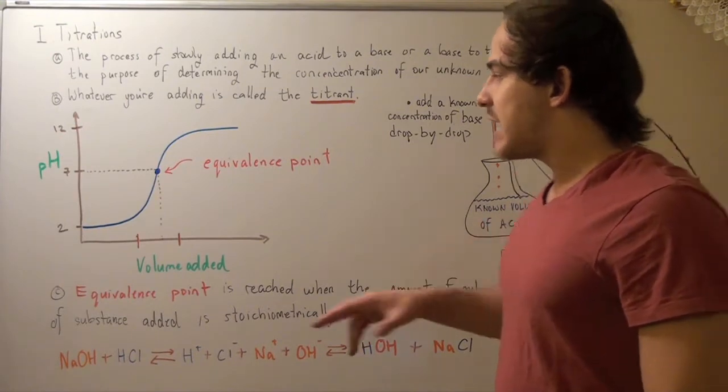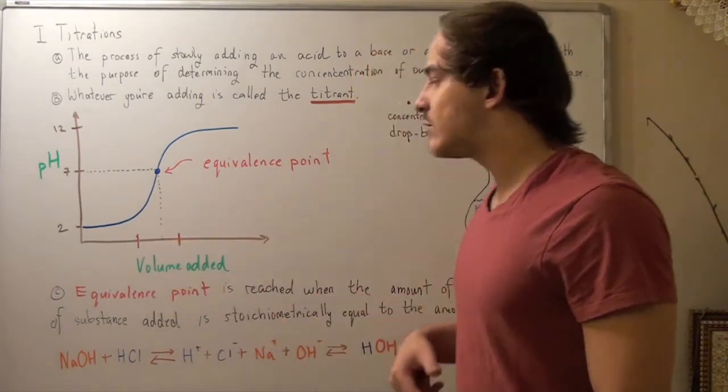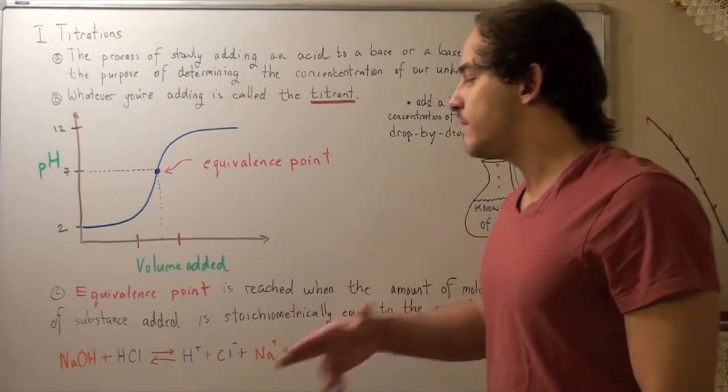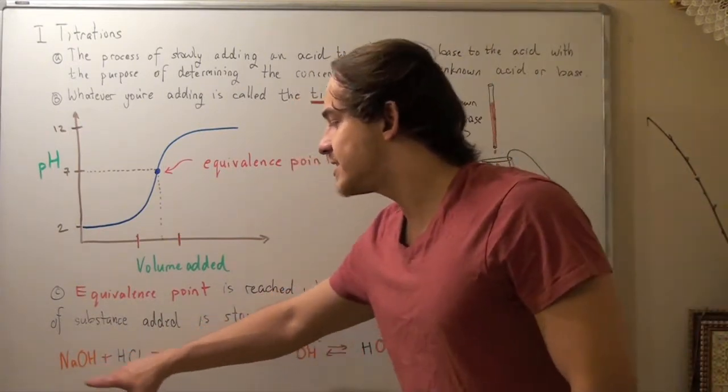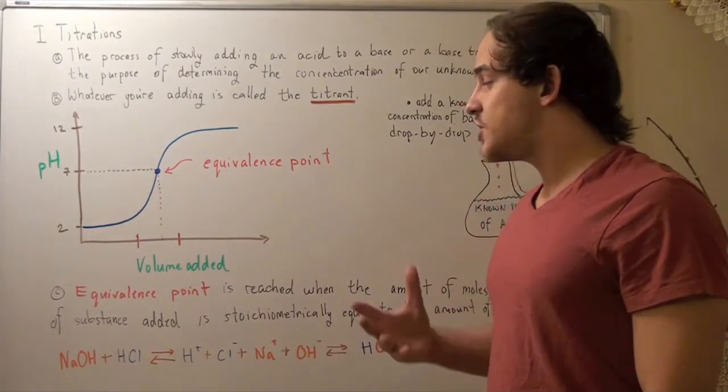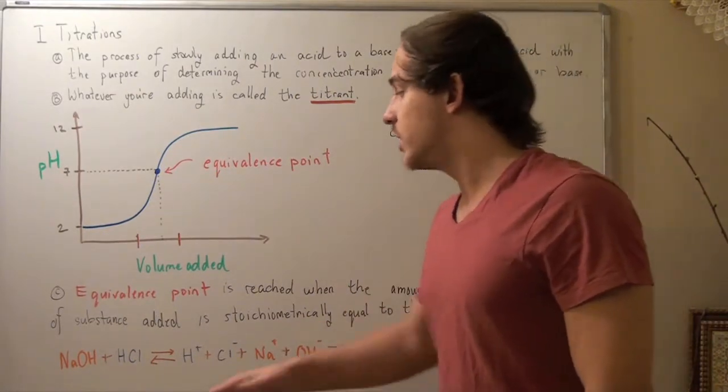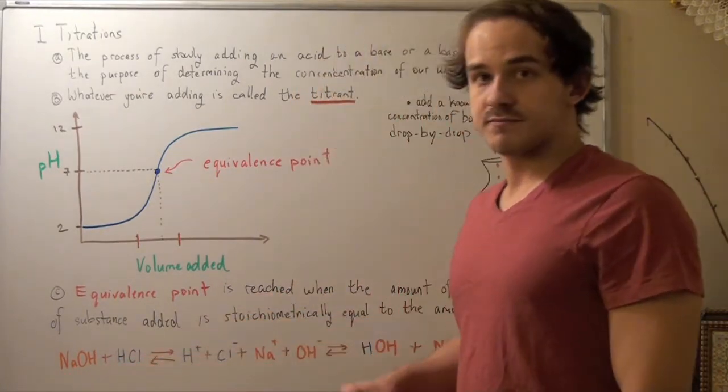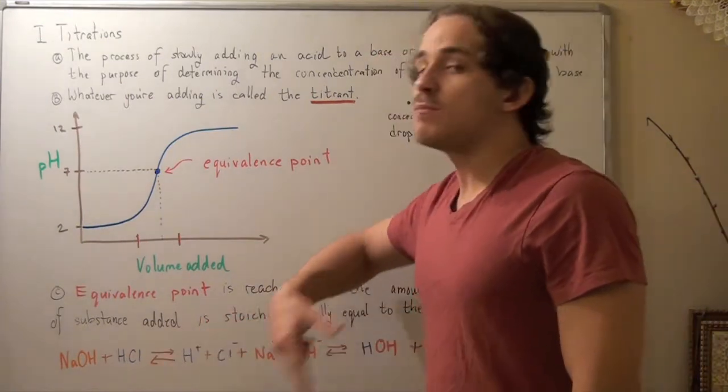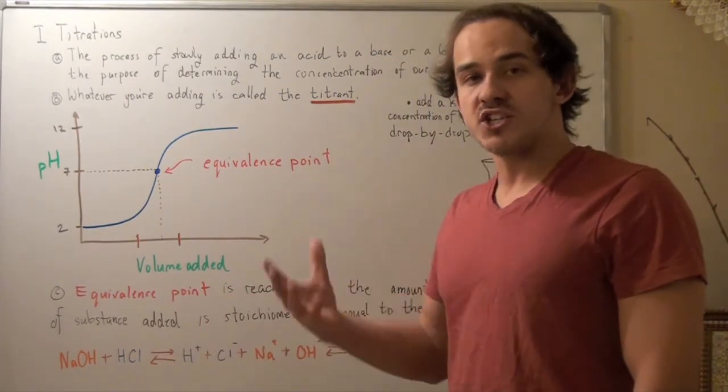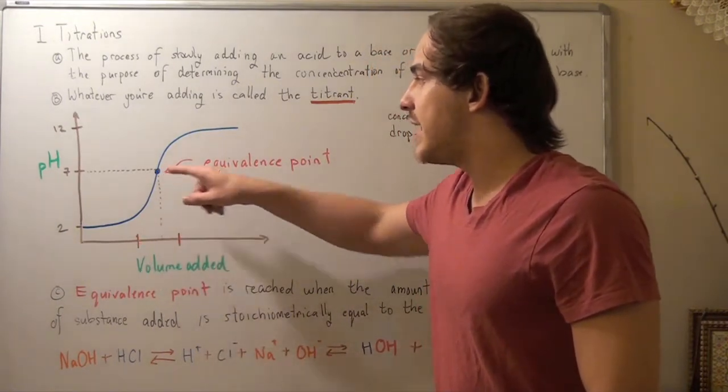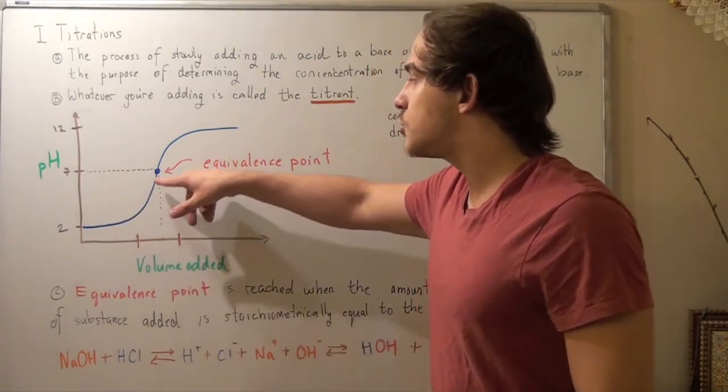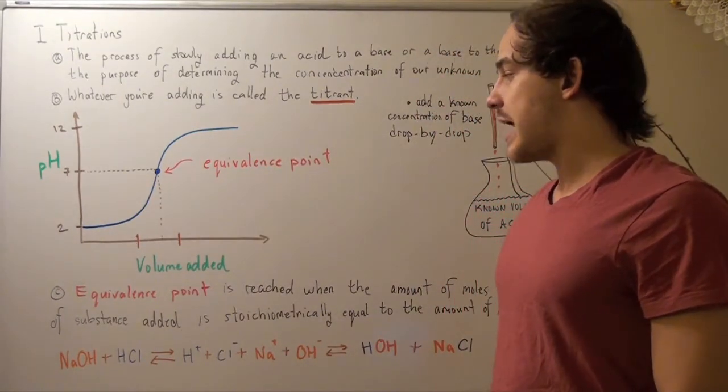This point is where we add enough NaOH that our ratio begins to equal out. Our ratio becomes closer and closer to 1 and 1. As we add more, as we get closer to a ratio of 1 to 1, we get closer to our pH of 7. And that's why we see this large increase in pH.